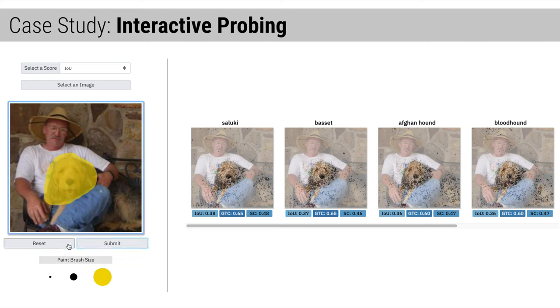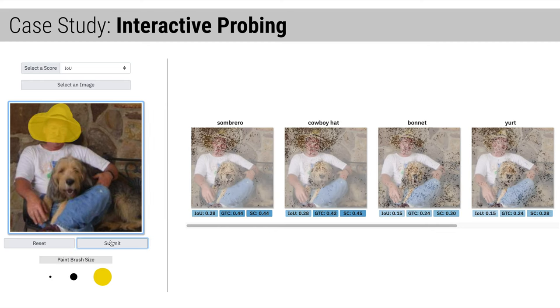Next, we select the man's hat. Even though this image is labeled otterhound, the classes with the highest Shared Interest to the hat region are other types of hats, suggesting the model has also learned about secondary objects.